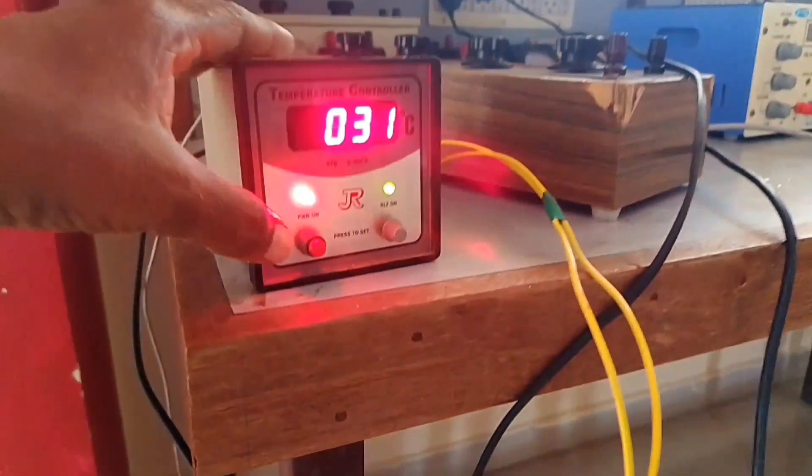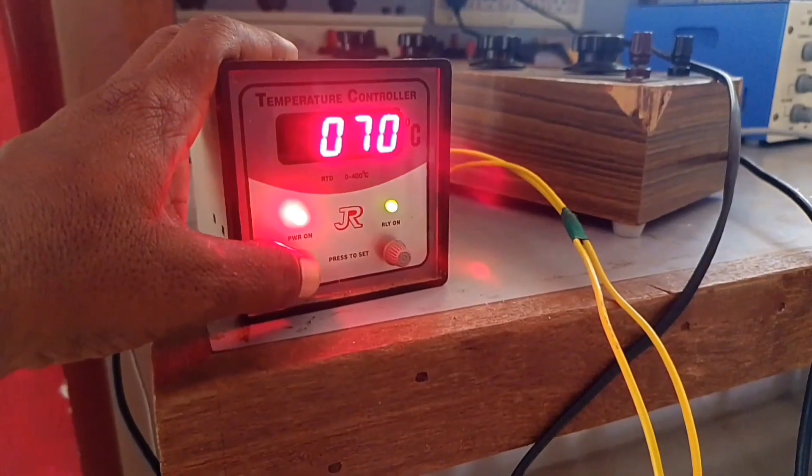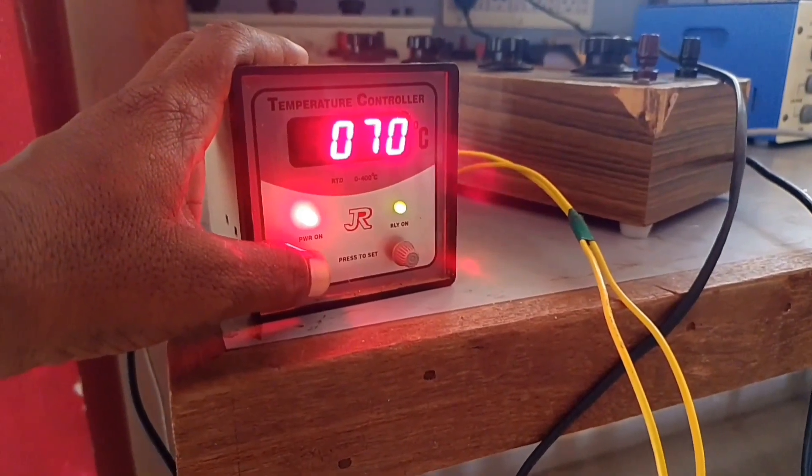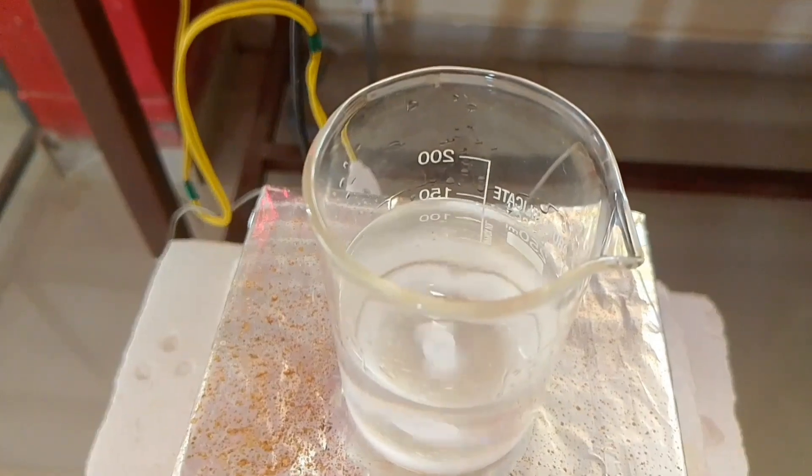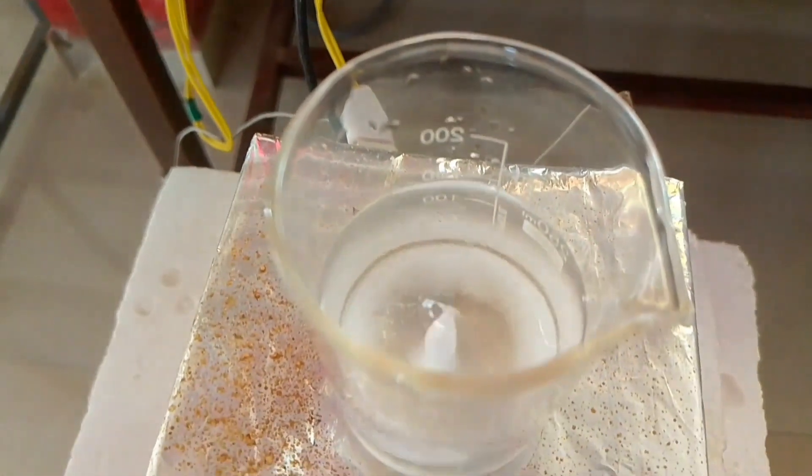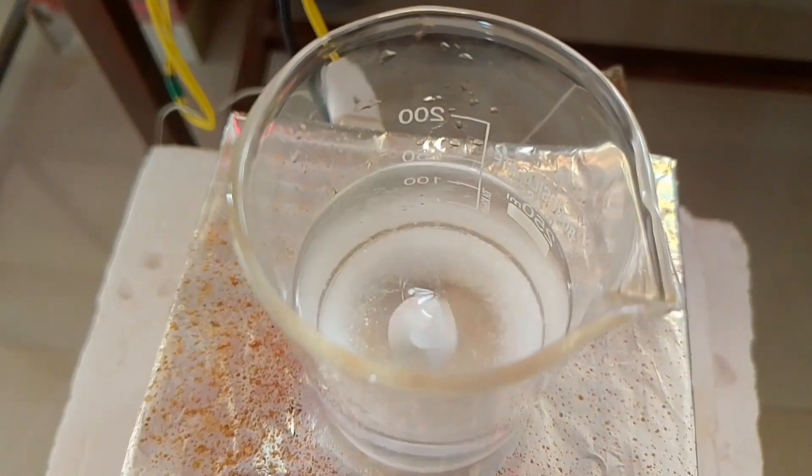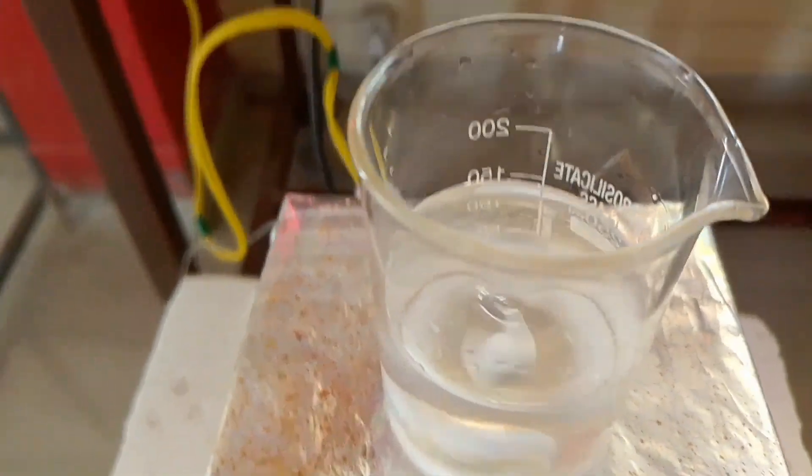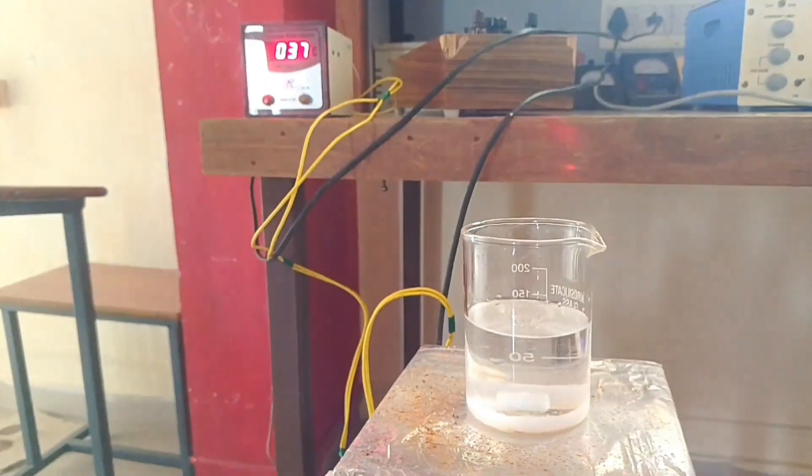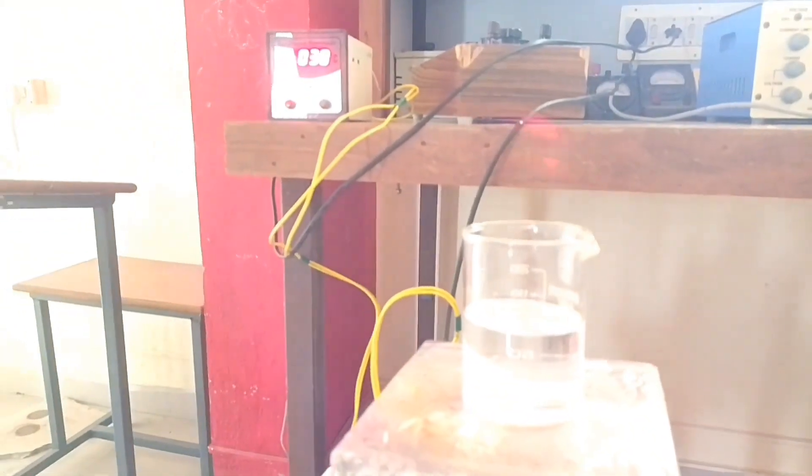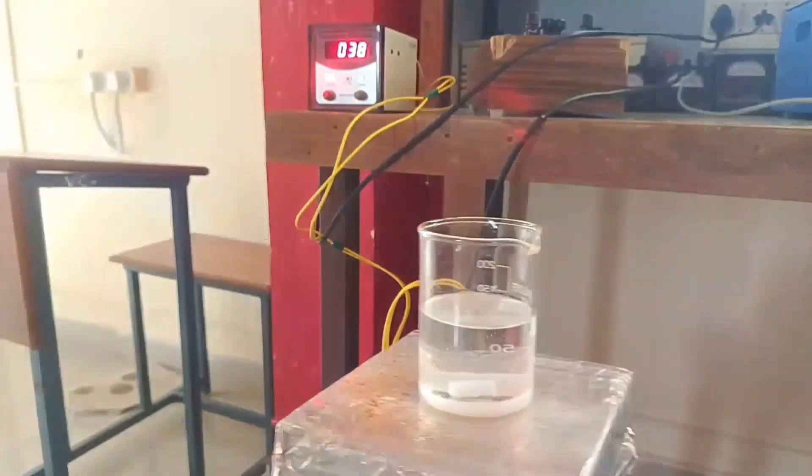I am going to stir this solution at a temperature of 70 degrees centigrade. You can see on the screen the solution is stirring with the help of hot plate magnetic stirrer. This hot plate is externally connected to a microcontroller controlled temperature controller.